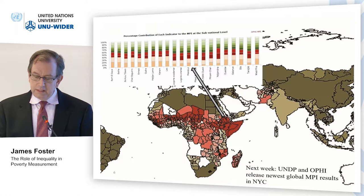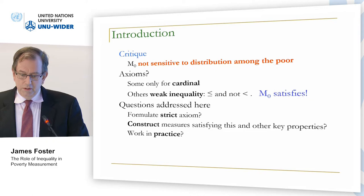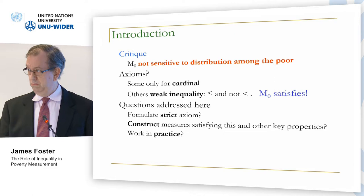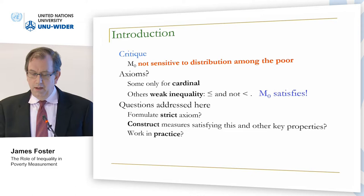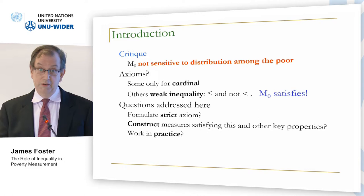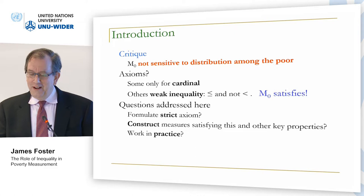There's been a critique that the M0 measure — the adjusted headcount ratio — isn't sensitive to distribution among the poor. When I get that critique, I always ask: where's your axiom? Some of these axioms are only applicable to cardinal measures. Other axioms almost all have a weak inequality, which allows poverty not to change when inequality changes, and hence M0 satisfies. So we thought we'd sort this out by putting down a strict axiom that actually did the trick — one we could critique ourselves on.